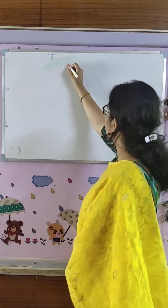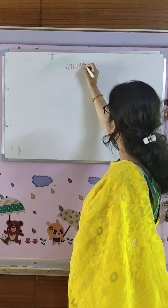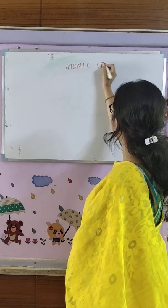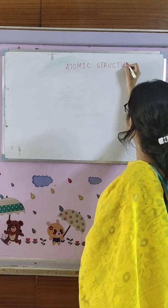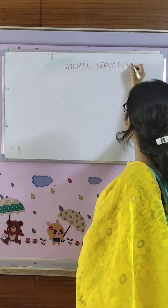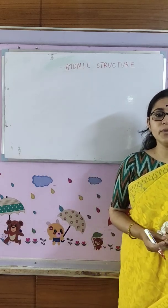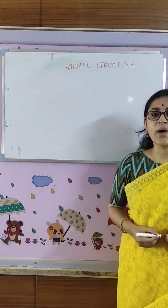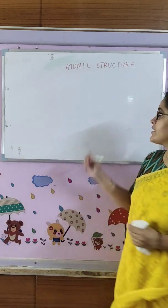We will start with chapter number 4, Atomic Structure. From the name only, we can understand that we will learn about the structure of an atom — that is, how an atom looks like. Before we come to atom, we want to discuss a small thing about matter.